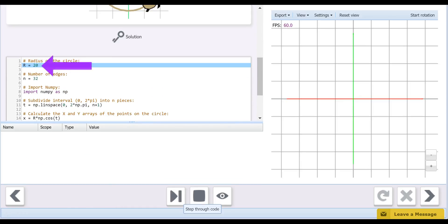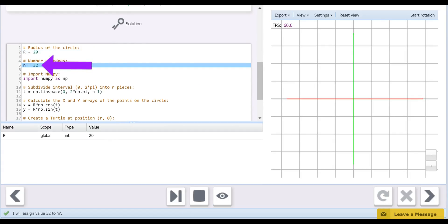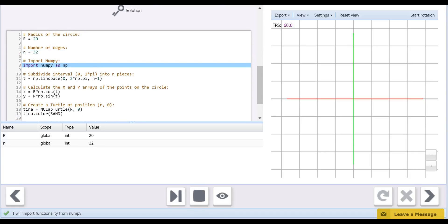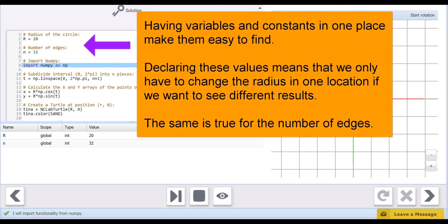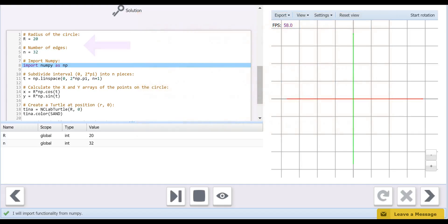We begin by defining the variables R, the radius, on line 2, and n, the number of intervals, on line 5. Defining these at the start of the program makes it easy to try different values without overwriting the code in the main part of the program. Next, we import the NumPy library on line 8.